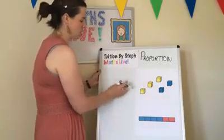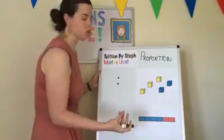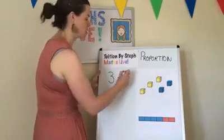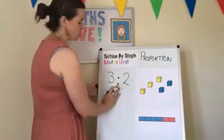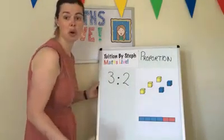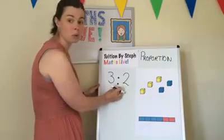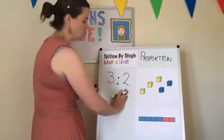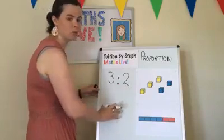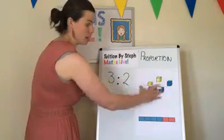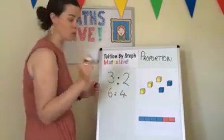Ratio is comparing two parts side by side. I might say: what is the ratio of yellow blocks to blue blocks? For every three yellow blocks there are two blue blocks. A great question from Summer: why do we use a colon to separate numbers? The colon shows that the numbers are separate but interlinked — there are three parts to two parts and you need both to balance the ratio. If you wanted to double the ratio it would become six to four, but it's still balanced on each side.